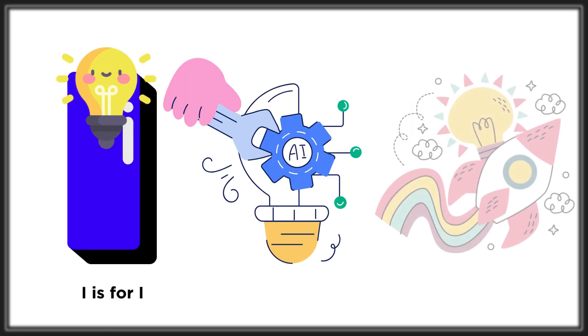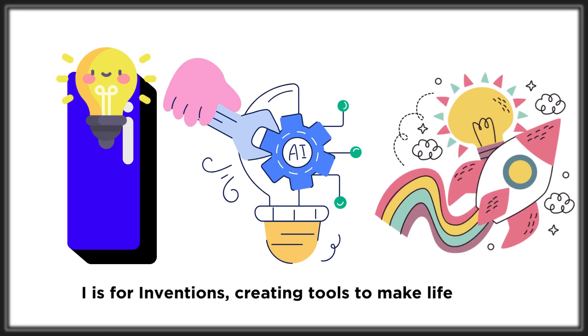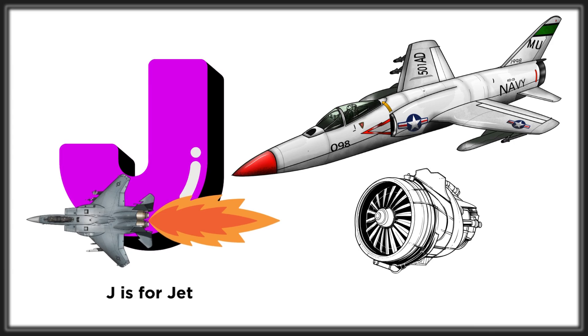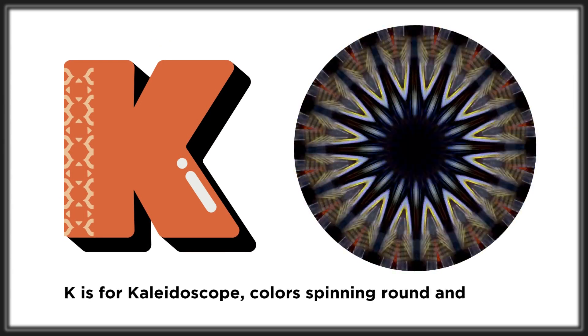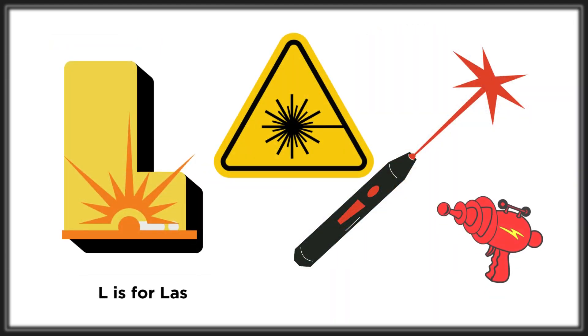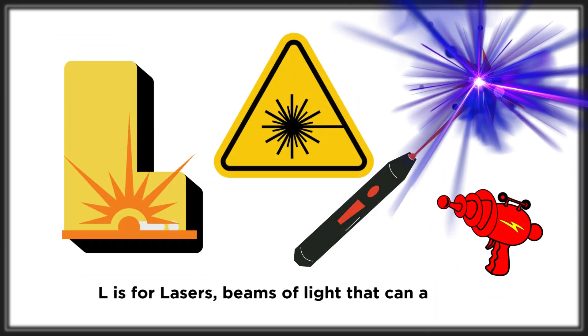I is for inventions, creating tools to make life great. J is for jet engines, flying high at rapid rates. K is for kaleidoscope, colors spinning round and round. L is for lasers, beams of light that can astound.